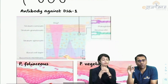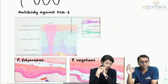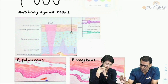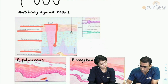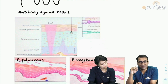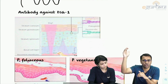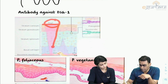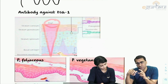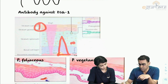Let's understand the distribution of desmogleins in the epidermal layers. The layers from top to bottom are: corneum, granulosum, spinosum, and basale. Desmoglein 1 (DSG1) is predominantly expressed in the upper layers, decreasing toward the lower layers. Desmoglein 3 (DSG3) is predominantly in the lower layers, decreasing toward the upper layers. Since 1 comes before 3, DSG1 is on top and DSG3 is below.